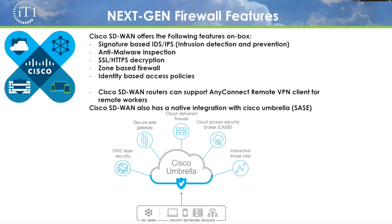Getting into the next-gen firewall features built into Cisco SD-WAN's platform: they have signature-based IDS/IPS — intrusion detection and prevention — anti-malware inspection, SSL/HTTPS decryption, and zone-based firewall. You can create firewall policies based on identity, so you can say this group of users is allowed to access this resource but users in another group are not, rather than just relying on IP addresses. And recently, you can now run AnyConnect remote VPN client directly to your SD-WAN router, so you no longer need a Cisco ASA for your remote users.